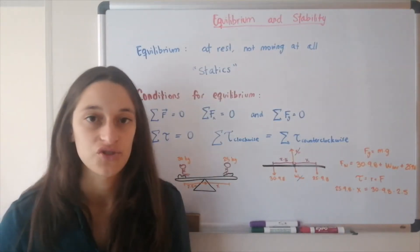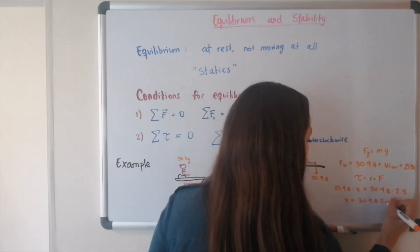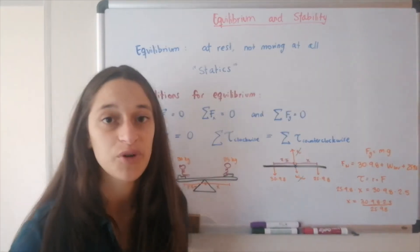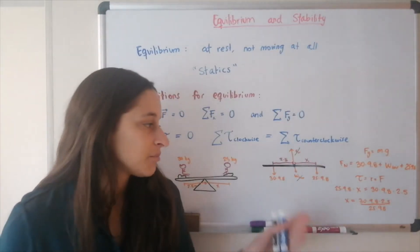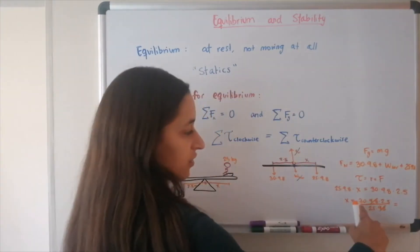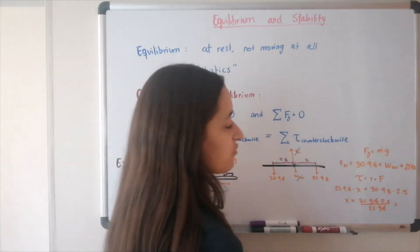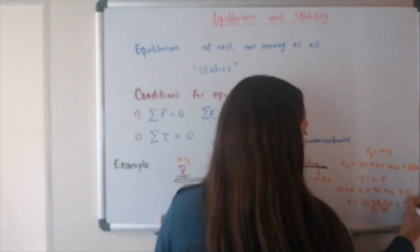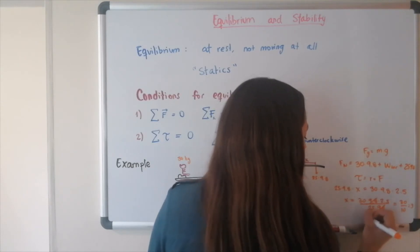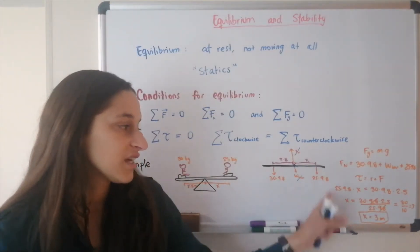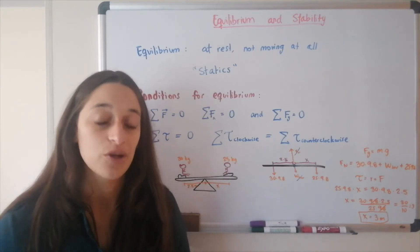Solving: x = (30 × 9.8 × 2.5) / (25 × 9.8). Notice that 9.8 appears on both top and bottom — that will always happen because weights are always mass times 9.8 — so we can cancel 9.8. We get 30 × 2.5 / 25. Since 25 is 10 times bigger than 2.5, this simplifies to 30 / 10 = 3. So the distance is 3 meters. That is the solution: the kid has to be 3 meters away for the bar to be in both translational and rotational equilibrium.